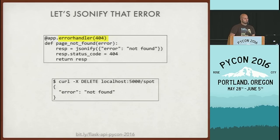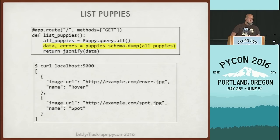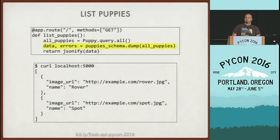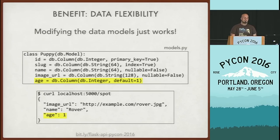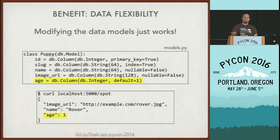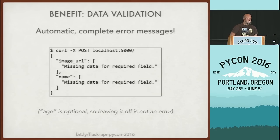Flask has integrated error handlers so you can say: if you get a 404 exception, return a JSONified error message instead of the default HTML. We can also make a simple view to list all puppies in the database — just get all puppies and dump them out. Each individual puppy is output the same way the schema defined. And because we're using Marshmallow, we get data flexibility — we can add new fields to our models and they'll be instantly represented in the data output.